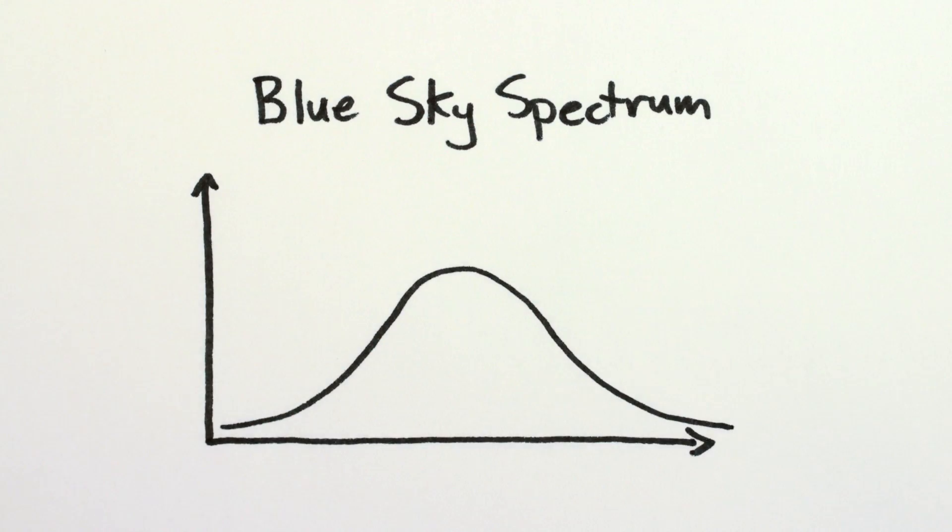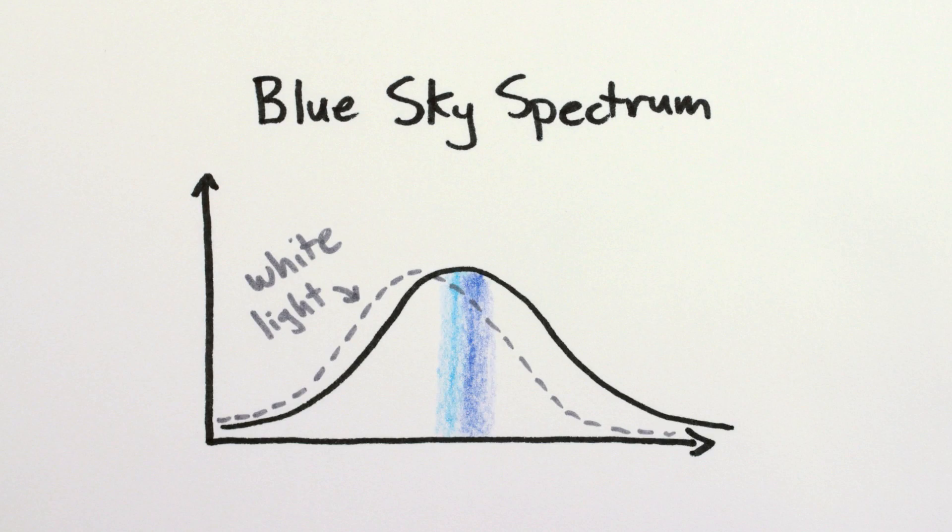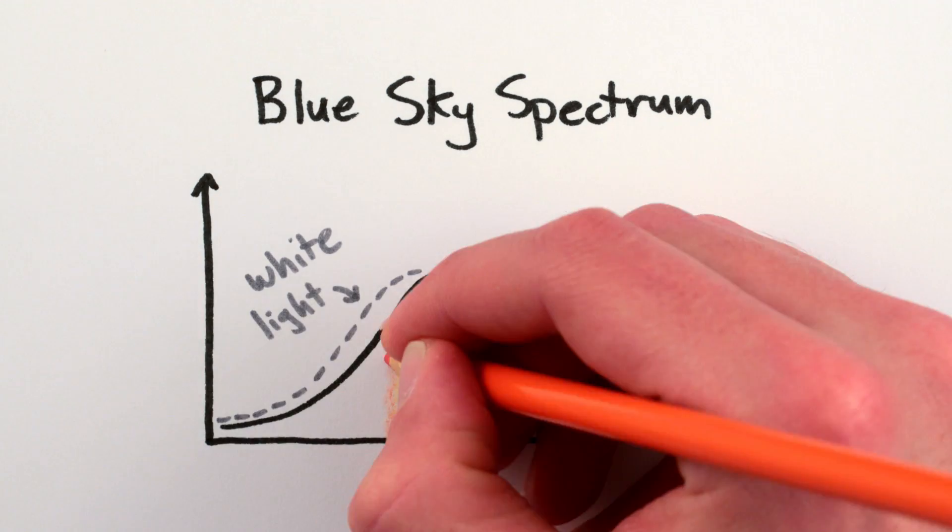It still has a wide range of frequencies in it, with slightly more blue than in white light, roughly the same amount of green, and less red.